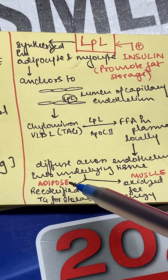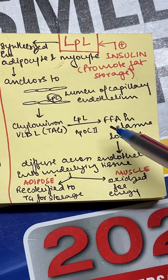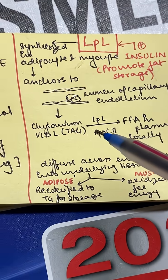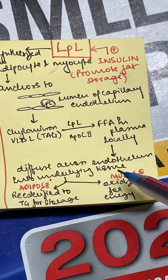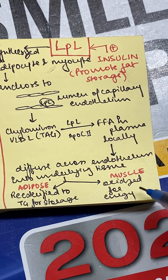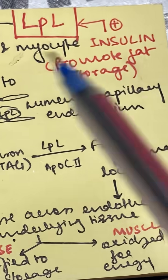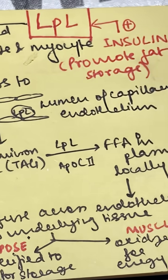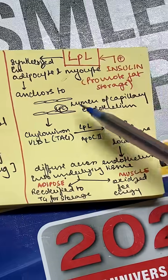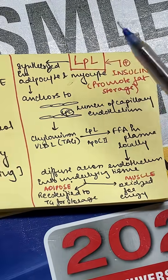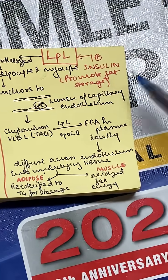These free fatty acids diffuse across the endothelium into the underlying adipose or myocyte tissue. In the adipose tissue, they are re-esterified back from free fatty acids to triglycerides for storage, and in the muscle, they are oxidized for energy. So essentially, insulin is promoting fat storage even though it is acting in favor of lipoprotein lipase, which causes lipolysis.